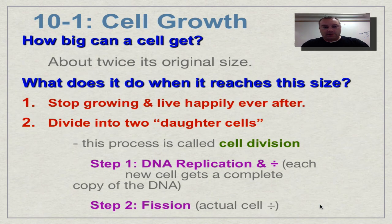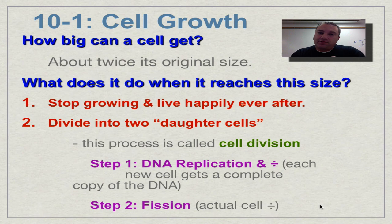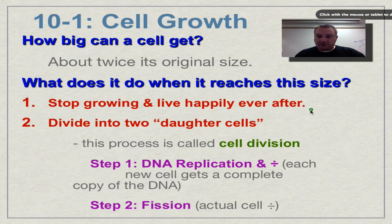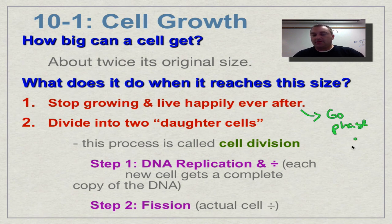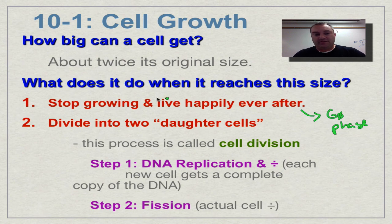So how big can a cell actually get? It can grow to about twice its original size. Once it reaches that point, it has two choices. Number one: it can simply stop growing and live happily ever after, which is called the gap zero phase — written G₀. Many cells in your body are in this phase; they reach a certain size and remain there until the organism dies.